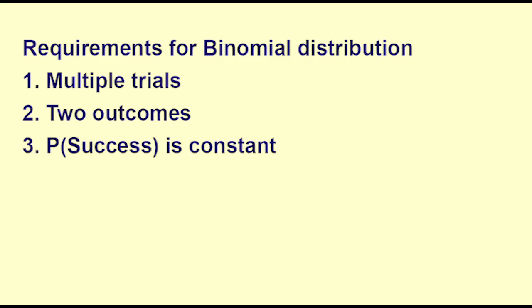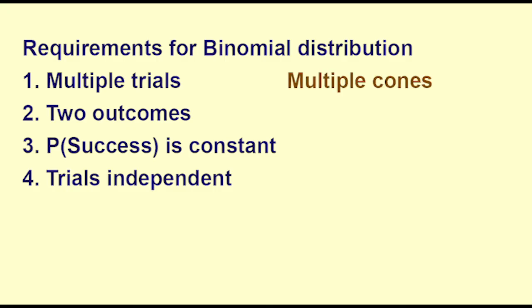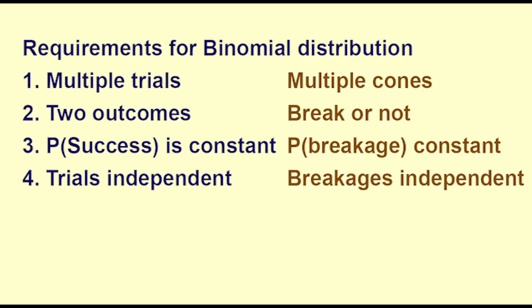Requirements for a binomial distribution to be applicable. There are four conditions for a binomial distribution. There are multiple trials. For each trial, there are two possible outcomes. The probability of success is constant, the same for each trial. And the trials are independent. The outcome of one does not affect the outcome of another. In our example, each of the cones was a trial. The outcome was either a breakage, success, or no breakage, failure. We assume that the rate of 5% breakage stays the same throughout the supply of cones. And we assume that one cone breaking is not going to affect whether or not the next cone breaks.